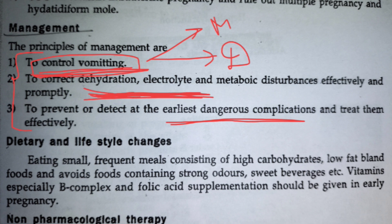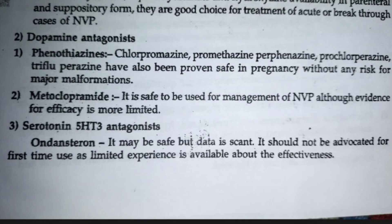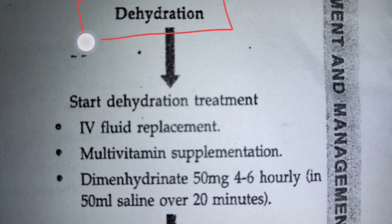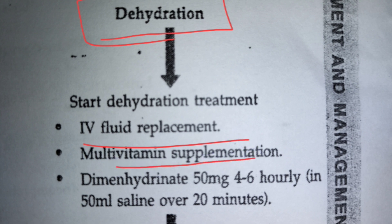For pharmacological methods, we generally use ondansetron to stop the vomiting sensation. Apart from this we have phenothiazine and metoclopramide — both also help stop vomiting immediately. If the diet pattern doesn't work, we further provide these medicines. With vomiting, dehydration commonly occurs, so we start IV fluids and multivitamin tablets. If the patient is very dehydrated and not regaining, we provide dimenhydrinate 50 mg as per the doctor's prescription.